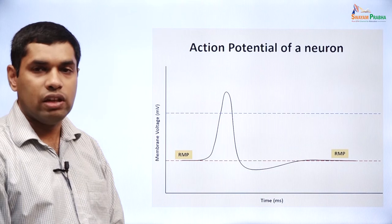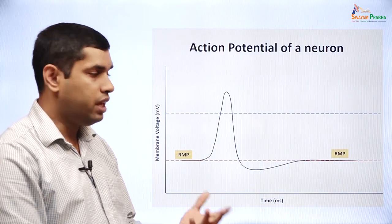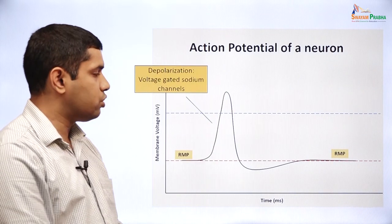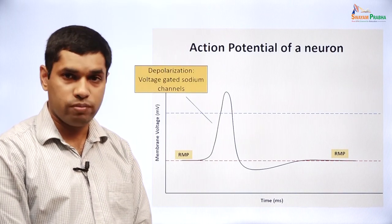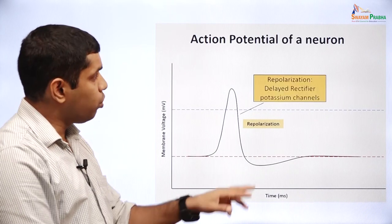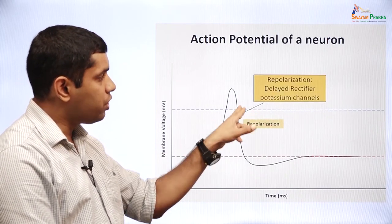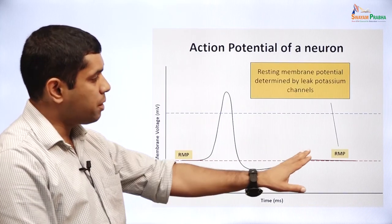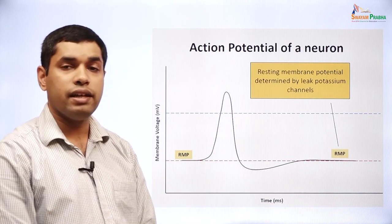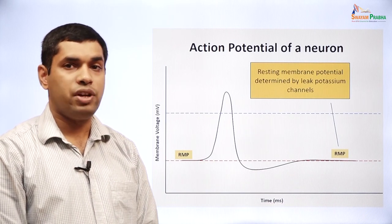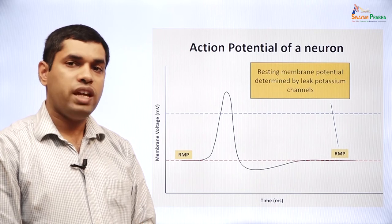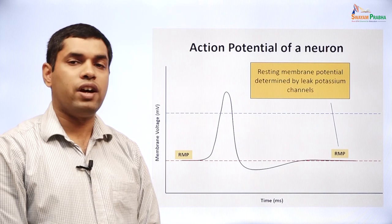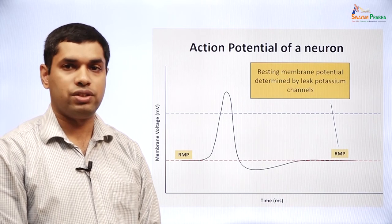Let us now summarize what we have learnt so far. The depolarization or upstroke of the action potential is due to opening of voltage-gated sodium channels. The repolarization is due to the opening of delayed rectifier potassium channels. The resting membrane potential is determined by the leak potassium channels, which contribute to membrane permeability. We have studied three important classes of ion channels which contribute to action potentials.